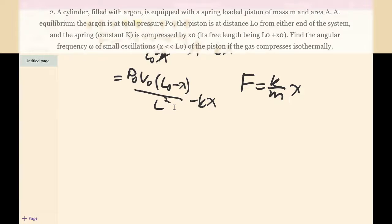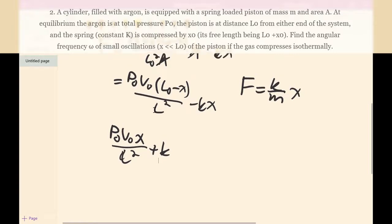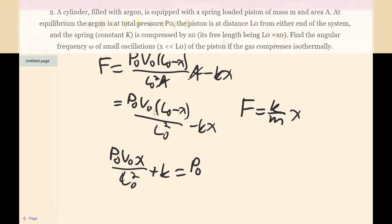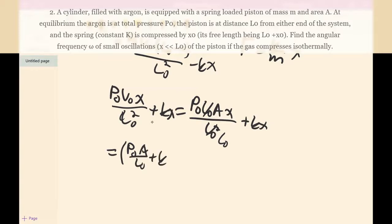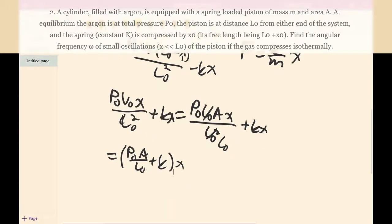And so we get something like this: P0V0x over L squared and minus, plus K actually since they're both negative. So then we can simplify this further because V, this is equal to P0 times L0Ax because V is just equal to L times A over L0 squared, and then plus Kx. And so we can cancel this out and we get P0 times A over L0 plus K times x.